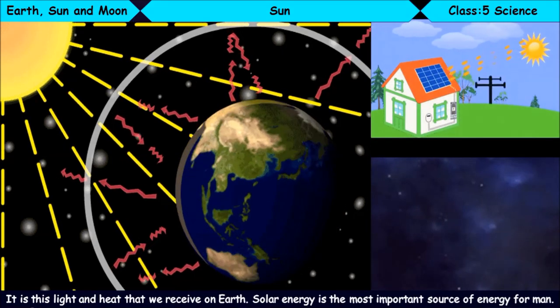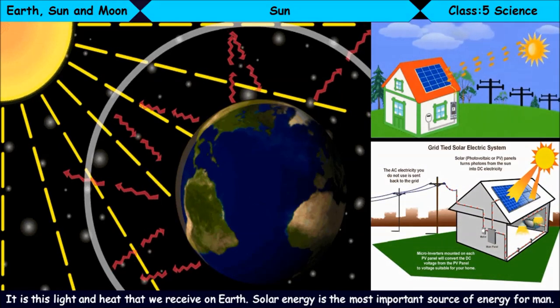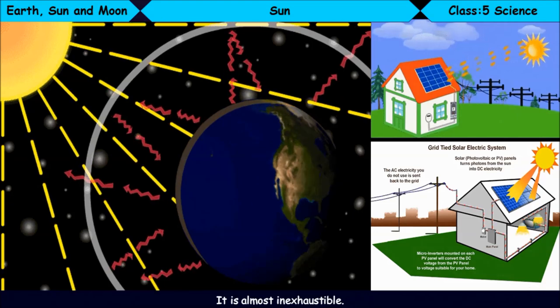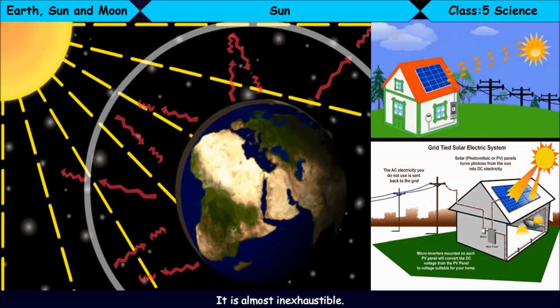It is this light and heat that we receive on Earth. Solar energy is the most important source of energy for man. It is almost inexhaustible. Well, it might get over, but not for another several billion years, at least.